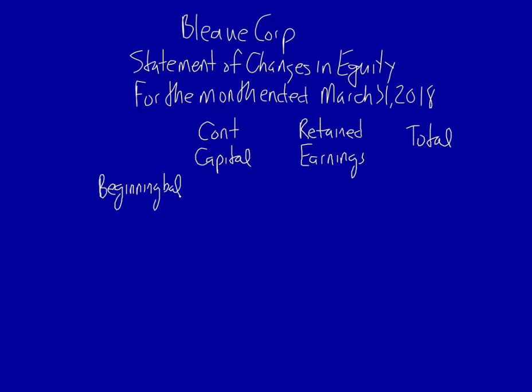I wasn't given a beginning balance for contributed capital, but I was given one for retained earnings. The beginning balance for contributed capital is therefore an unknown number which has to be calculated. Next I issued shares. When I issue shares, as you know from the flow chart covered in a previous video, issued shares are part of contributed capital — ten thousand dollars. Issued shares never impact retained earnings, so ten thousand plus zero equals ten thousand.